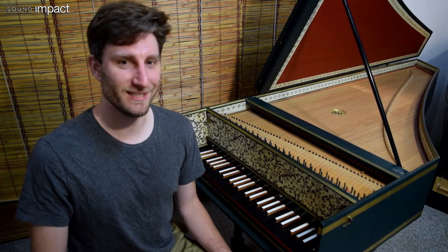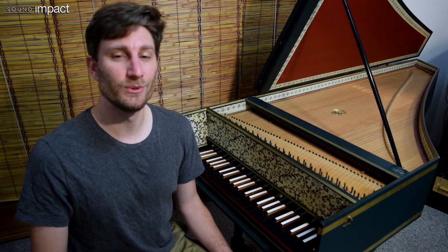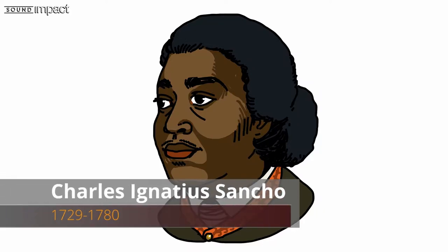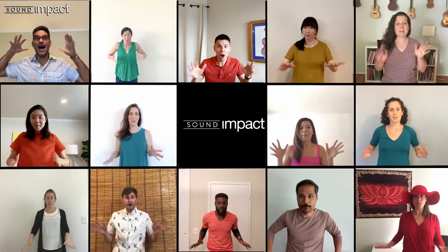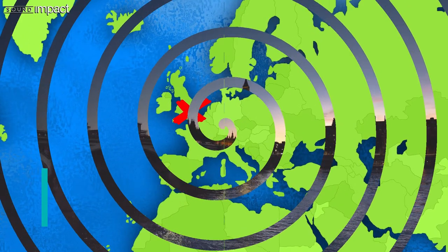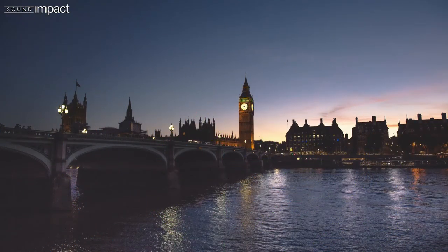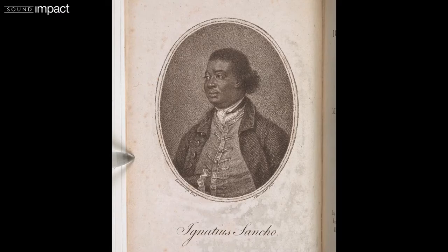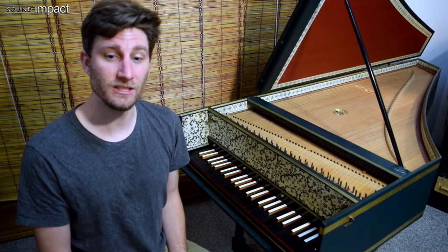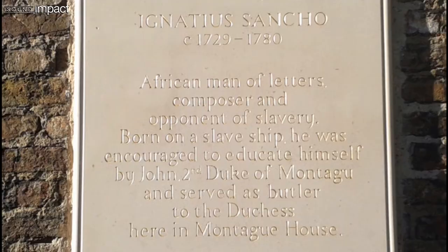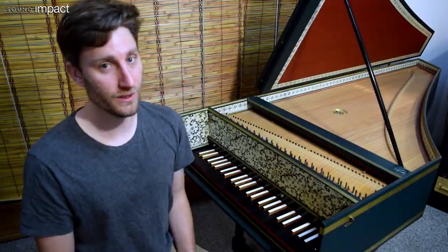J.S. Bach wrote many pieces for solo harpsichord, but let me introduce you to another composer who also composed harpsichord music, Charles Ignatius Sancho. Ready to meet him? Time to travel! We've landed in London in the year 1745 to meet the British composer, writer, and actor, Charles Ignatius Sancho. He was born around 1729 and gained fame in his time because he was the symbol of the humanity of Africans. He was one of the earliest people to write about African slavery in the English language. Now I'll play you one of his harpsichord compositions.